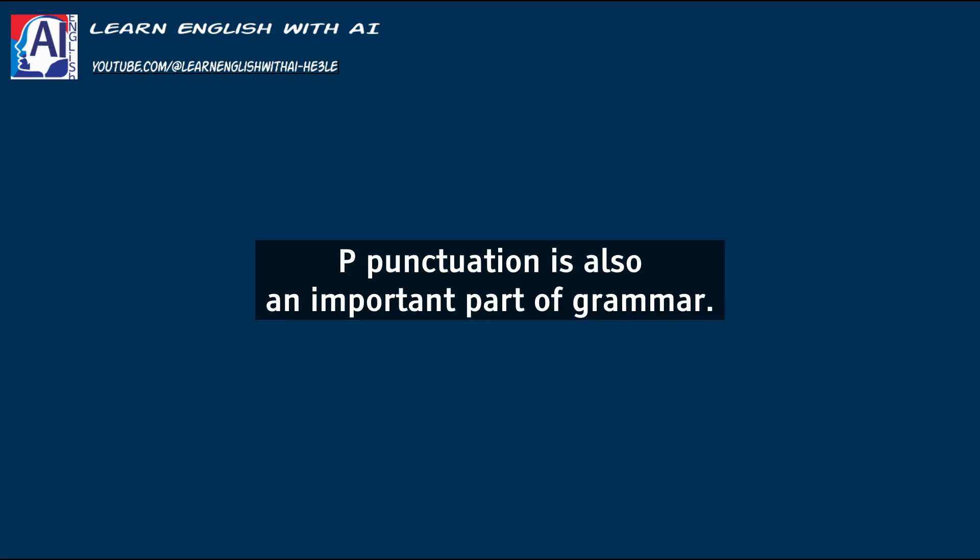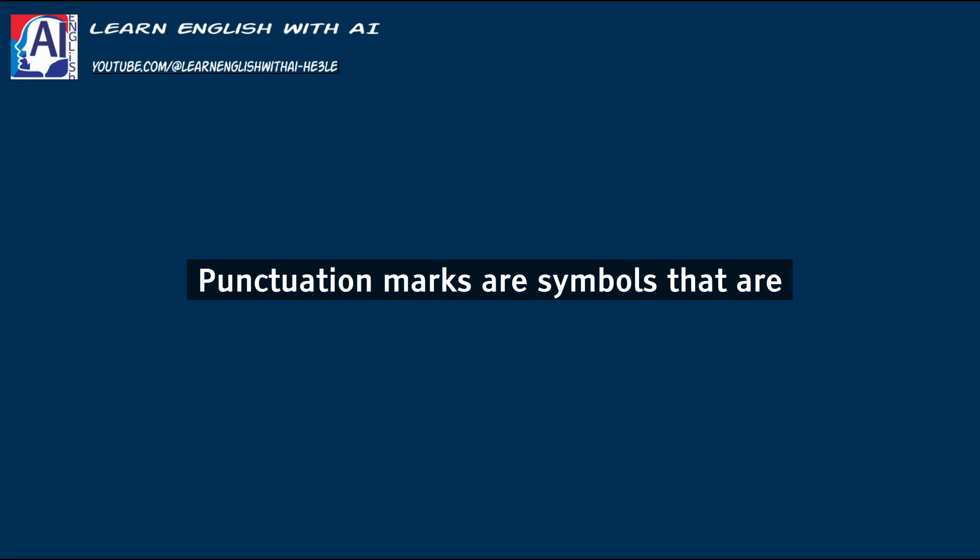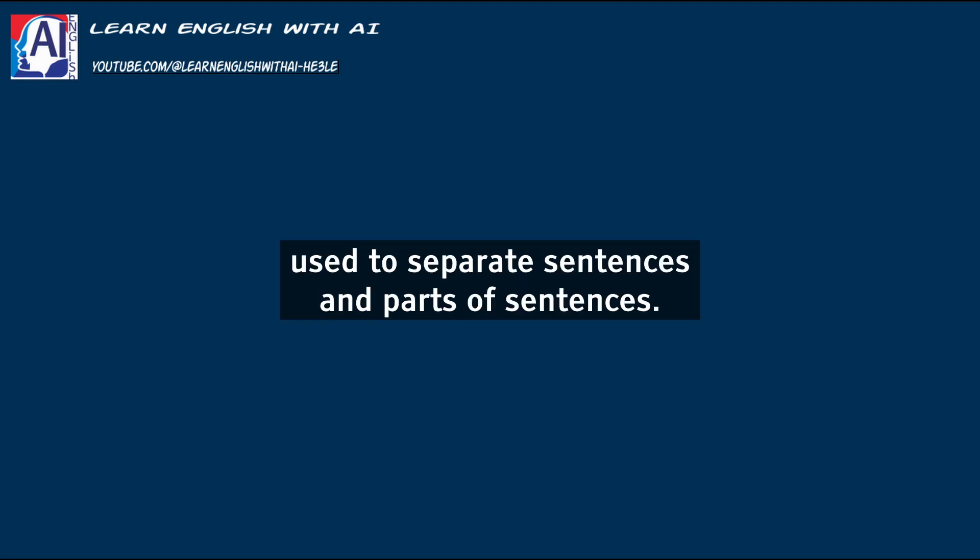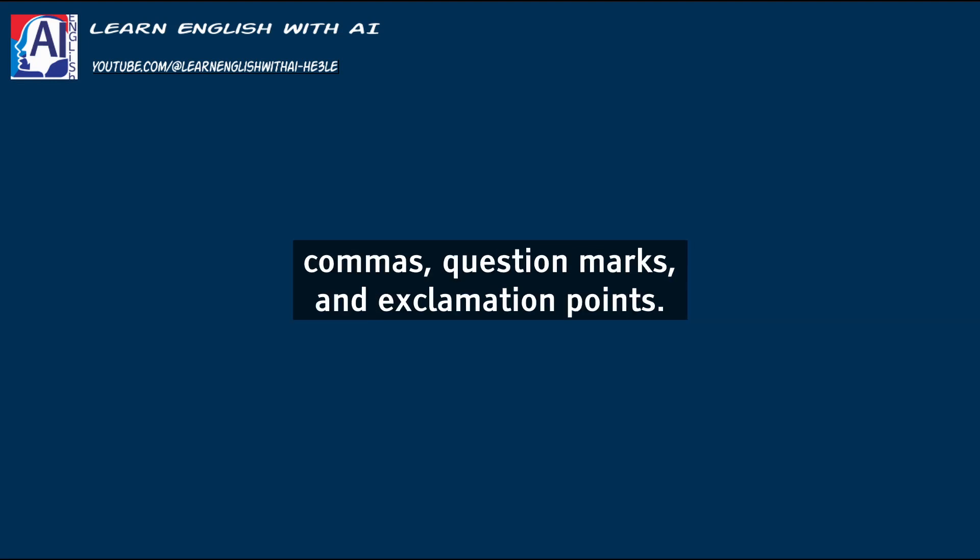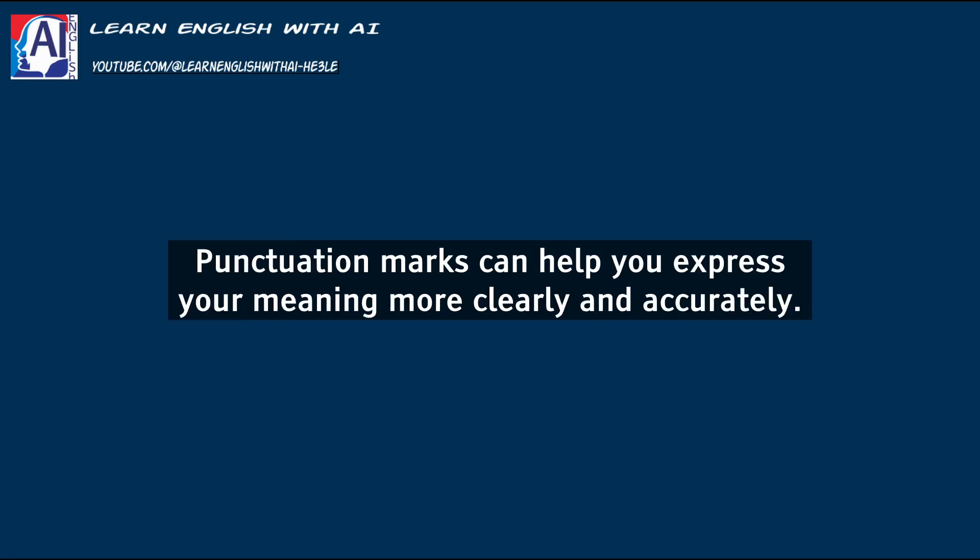Punctuation is also an important part of grammar. Punctuation marks are symbols that are used to separate sentences and parts of sentences. There are several different types of punctuation marks such as periods, commas, question marks, and exclamation points. Punctuation marks can help you express your meaning more clearly and accurately.